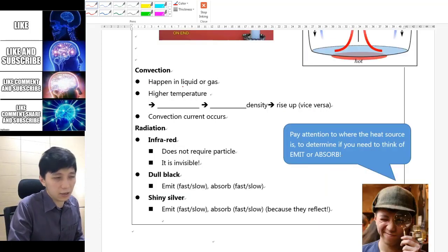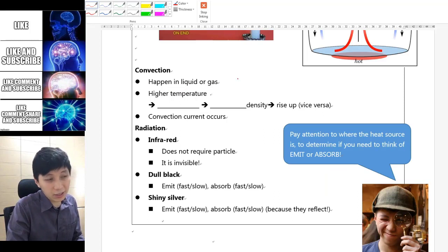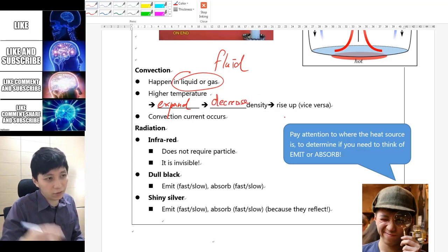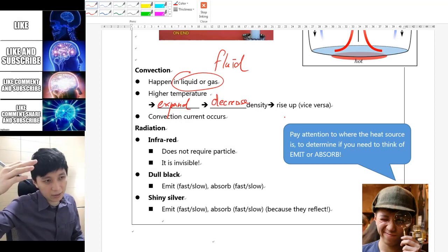For convection, as we said, it can happen in liquid or gas, or you can call them fluid. Due to high temperature, they would expand. When they expand, they would decrease their density, and therefore they will go up because less dense things will go up by its nature.